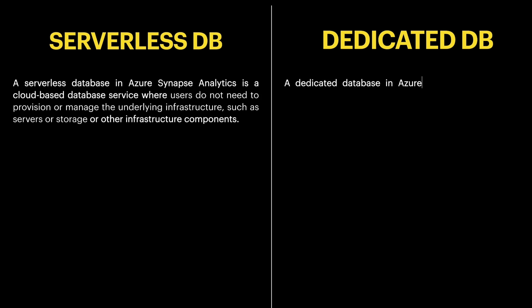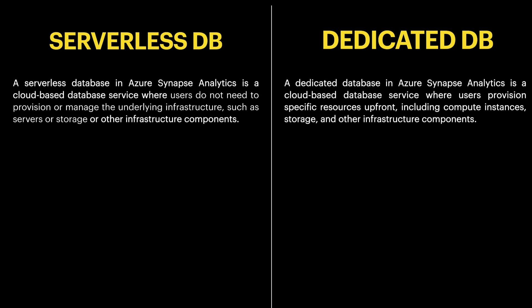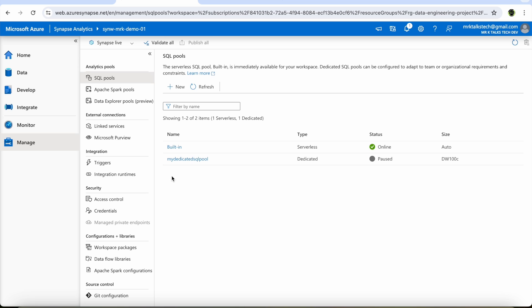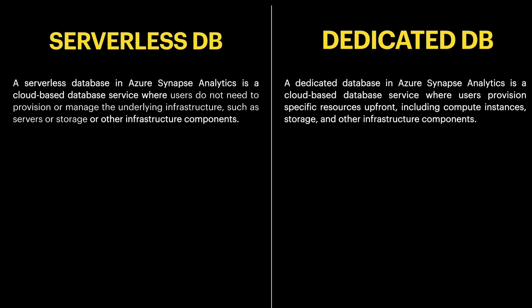On the other hand, the dedicated database is a cloud-based database service where users provision specific resources upfront, including compute instances, storage, and other infrastructure components. Unlike the serverless database, the dedicated database does not exist as a default one in Synapse Analytics — we have to create it if required. The infrastructure is completely maintained by us, such as configuring the amount of compute needed. That's why it is called a dedicated database.